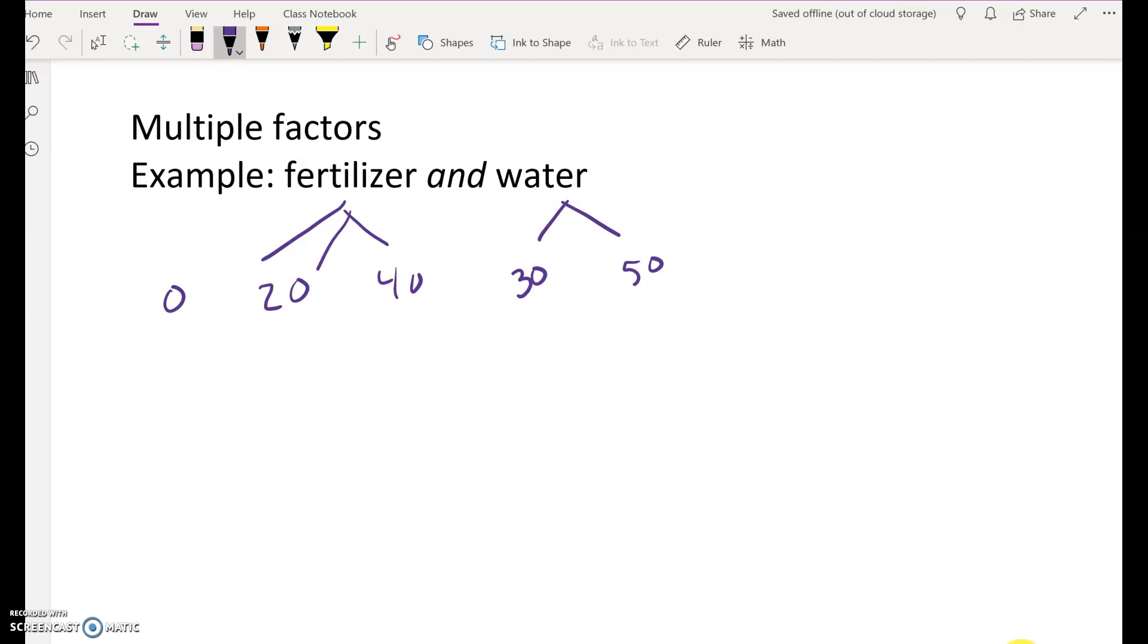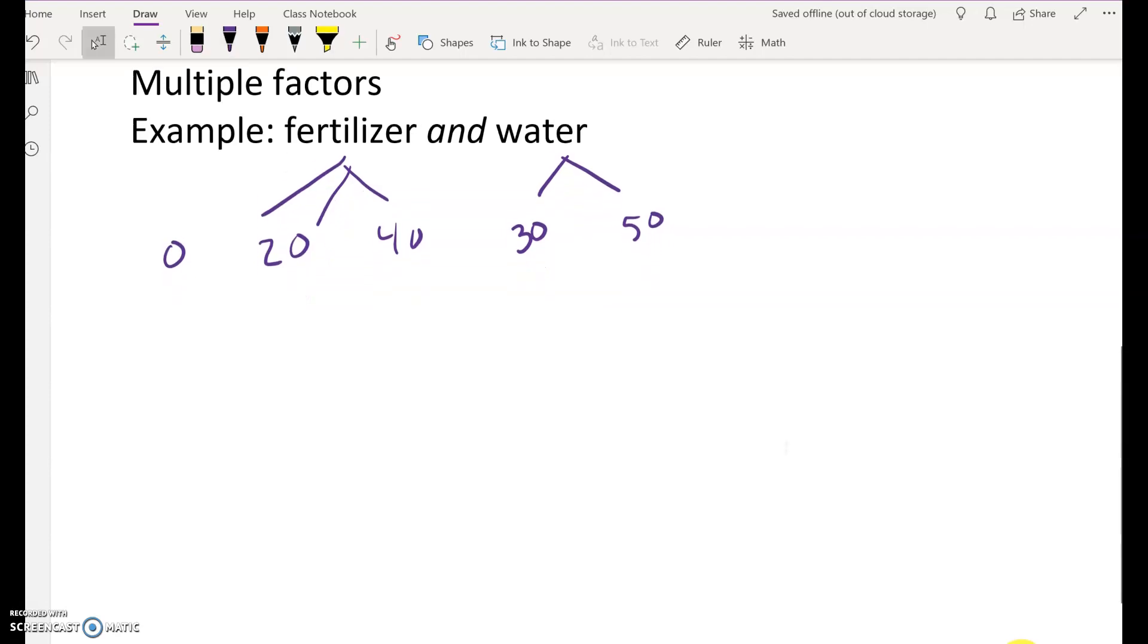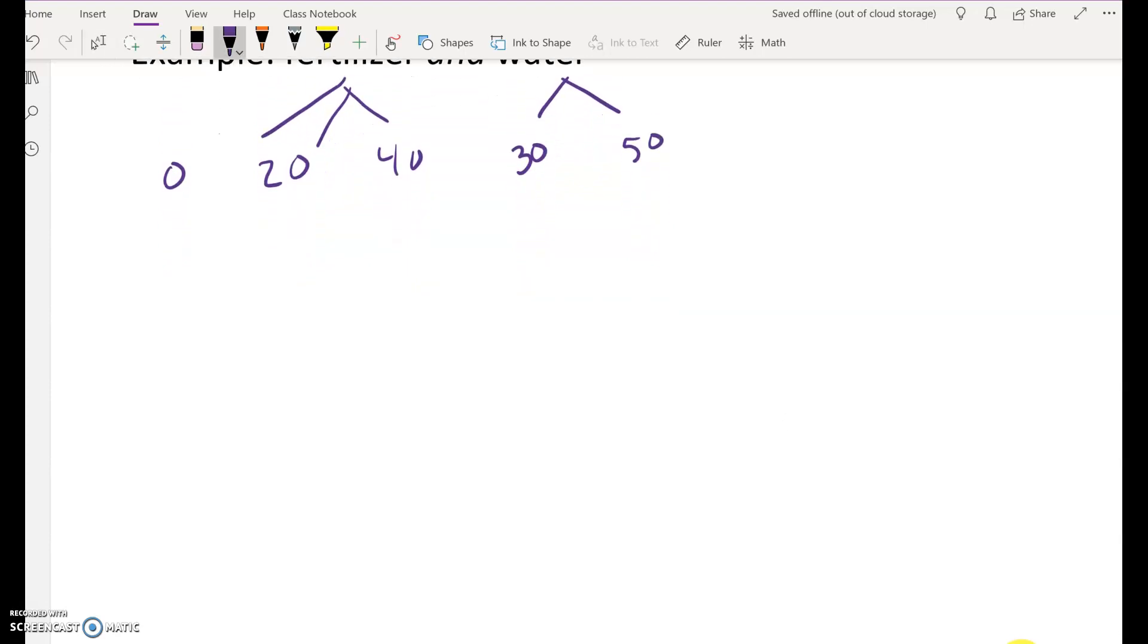And so then you have to mix and match all the different combinations to see how many different plots of land you would need. So, for example, you make a chart. So maybe water on the left, fertilizer,